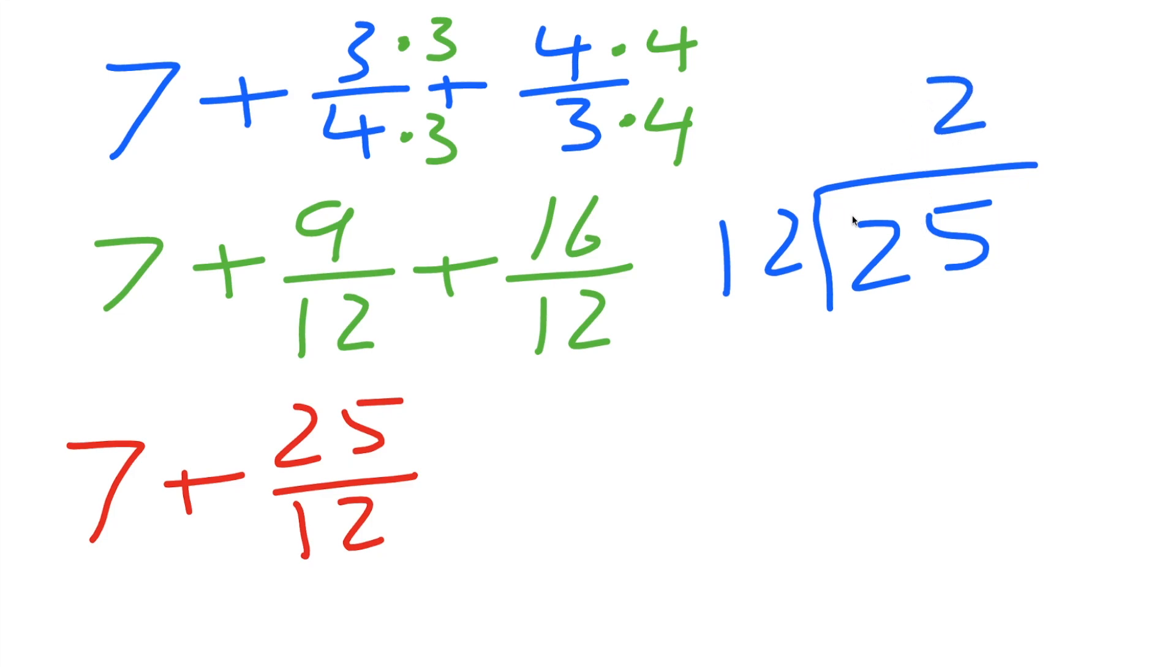How many times does 12 go into 25? 2. At least 2. Because 2 times 12 is 24, and when you subtract them, you have 1. You have a remainder. So you have 1 divided by 12 as remainder.